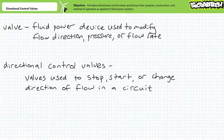A valve is a fluid power device designed to modify pressure, flow rate, or flow direction. A subset of these valves — those that modify flow direction — are appropriately called directional control valves. Directional control valves are designed to stop, start, and change direction of flow in a fluid power circuit. Which position a directional control valve assumes ultimately influences the actuation direction of a fluid power actuator.